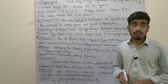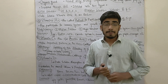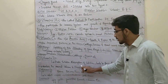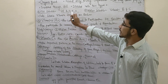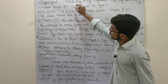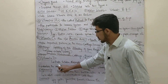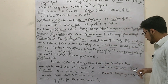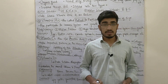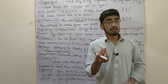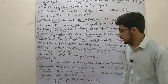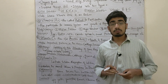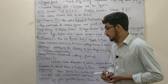Vitamin D is a fat-soluble vitamin. It helps in the absorption of calcium. Calcium helps to maintain bone and bone structure. It also helps maintain the normal calcium and phosphorus levels in the blood.